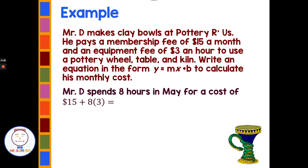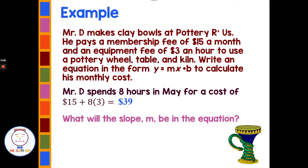Mr. D spends 8 hours in May for a total cost of $15 plus 8 times 3. That's 8 times 3 equals 24, plus 15 equals $39. So in May his total cost for the month is $39. What will the slope m be? A slope is something happening over and over at the same rate — also called unit rate or constant of proportionality. Each hour we're charged $3 for the pottery wheel, table, and kiln. So that $3 is the slope.